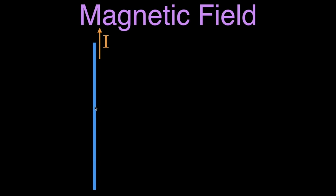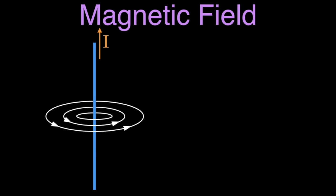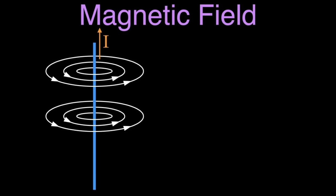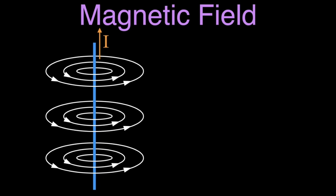Here we have our current carrying wire and the current is flowing in this direction. We want to think about which way the magnetic field would be moving. Using right-hand rule number one, we point our thumb up and reach our hand into the screen and wrap it around that wire. The magnetic field would be flowing in concentric circles around that wire in the counterclockwise direction. There is a magnetic field all the way along the length of that wire, moving in concentric circles in that direction.